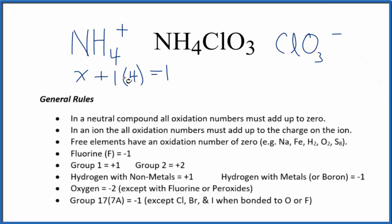So X plus four equals one. Subtract four from each side, X equals minus three. So the nitrogen here has an oxidation number of minus three, and we set each hydrogen as plus one.